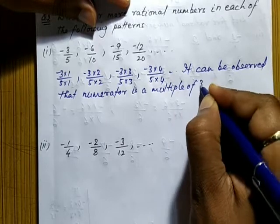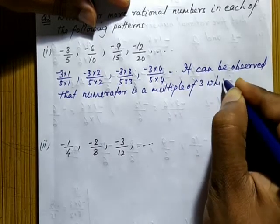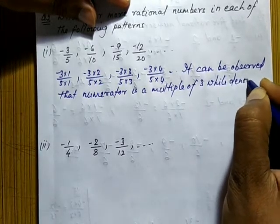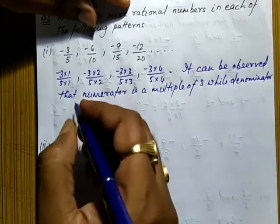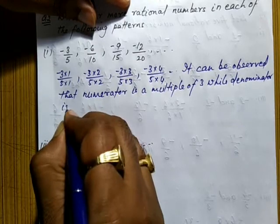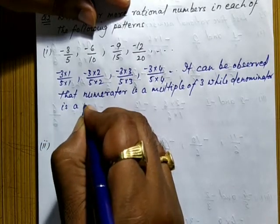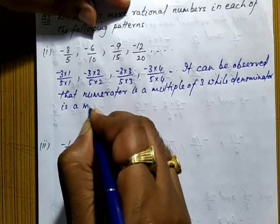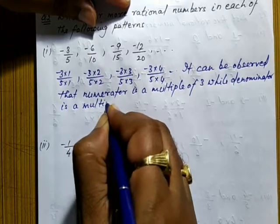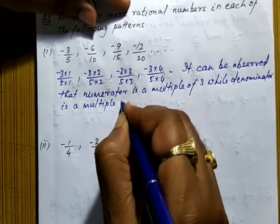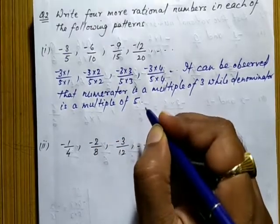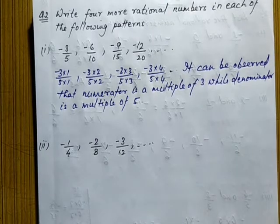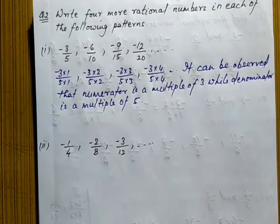It can be observed that the numerator is a multiple of three, while the denominator is a multiple of five, and these multiples are increasing.